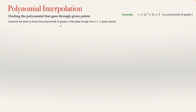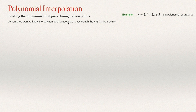Assume that we want to know the polynomial of grade n that passes through n plus 1 given points. We know n plus 1 given points and we want to find a polynomial of grade n that passes through these points. For example, if you have 4 points you can find a polynomial of grade 3, or if you have 3 points you can find a polynomial of grade 2, or if you have only 2 points you can get a polynomial of grade 1.